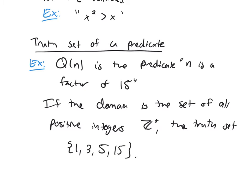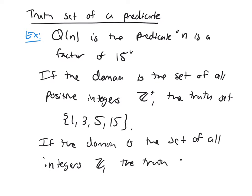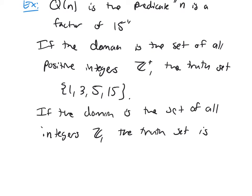Now if you change your domain, that's going to potentially change your truth set for your predicate. So if instead the domain is the set of all integers, the truth set—well, now we have negative numbers, so I still have my same four from before, but I now have negative 1, negative 3, negative 5, and negative 15. Those all divide 15.